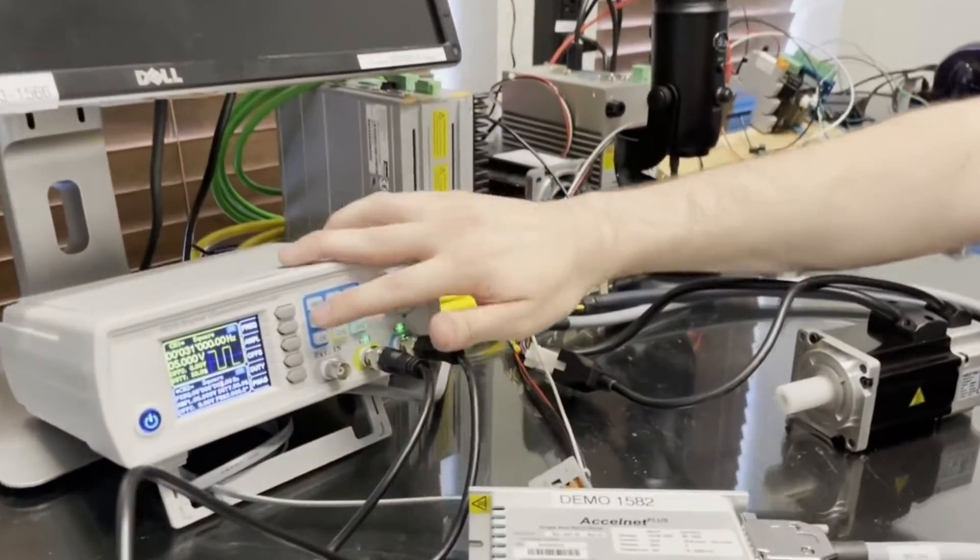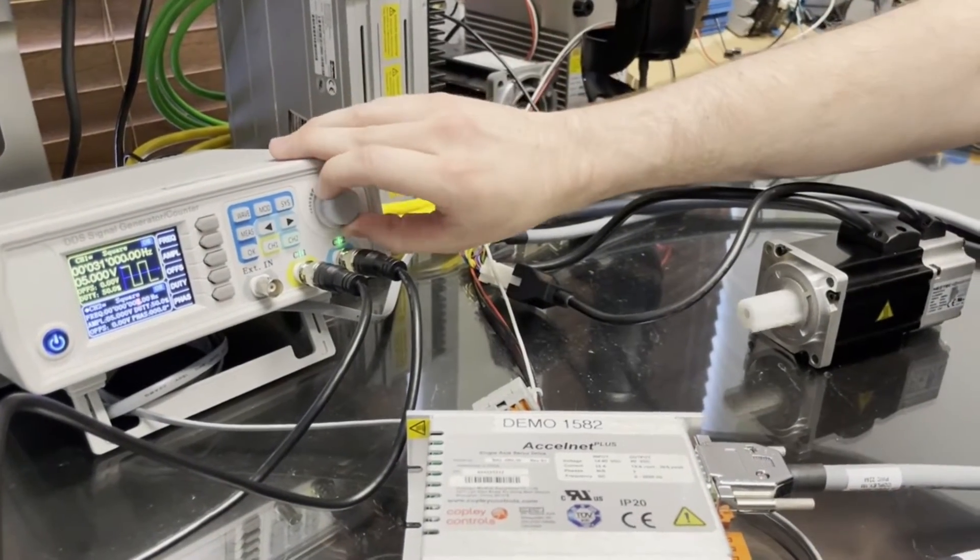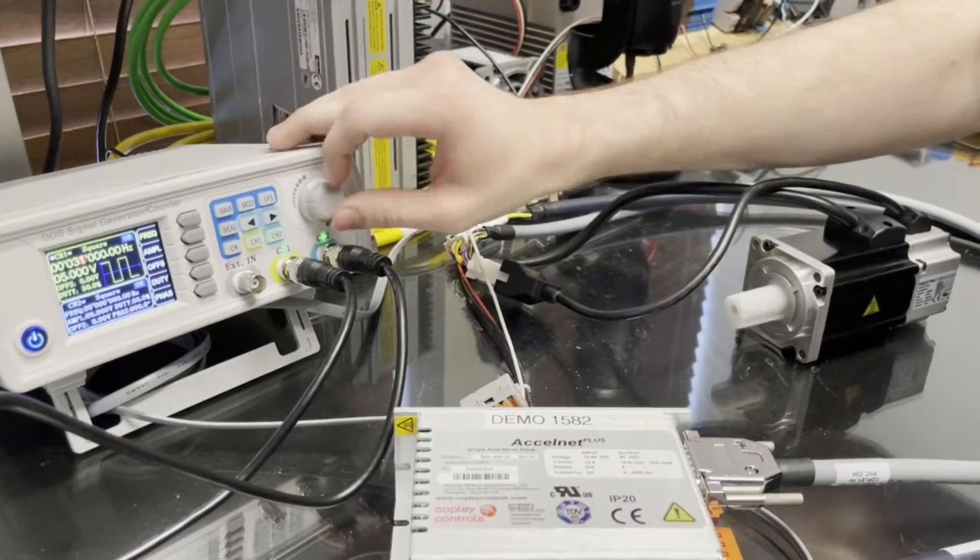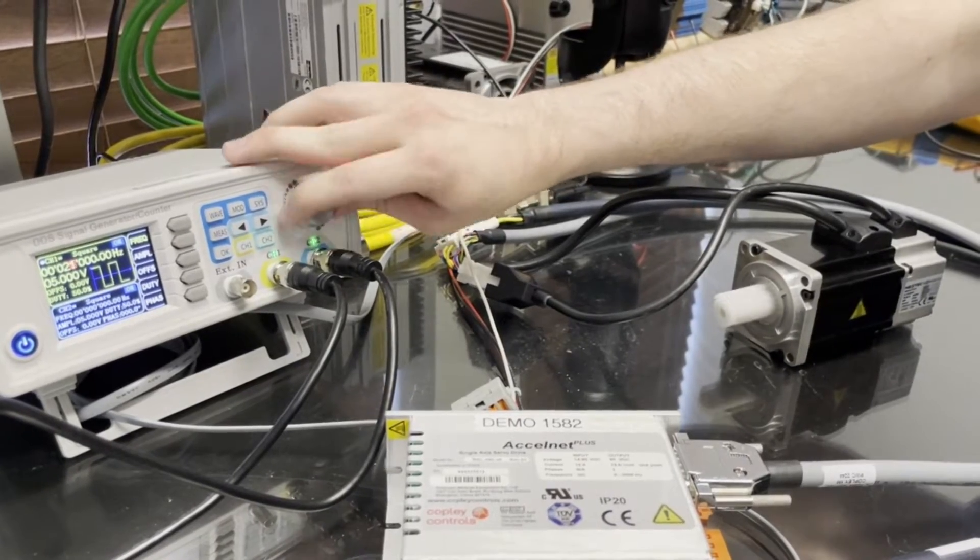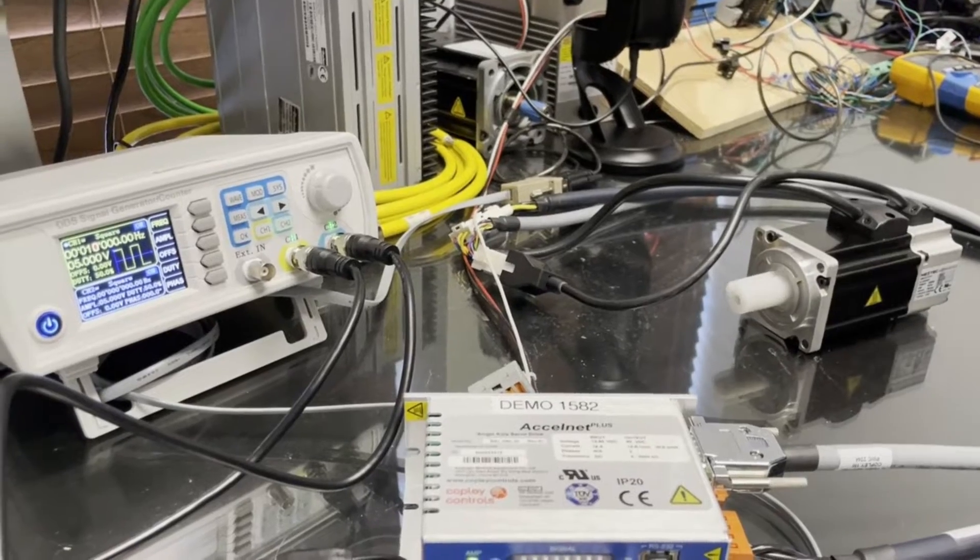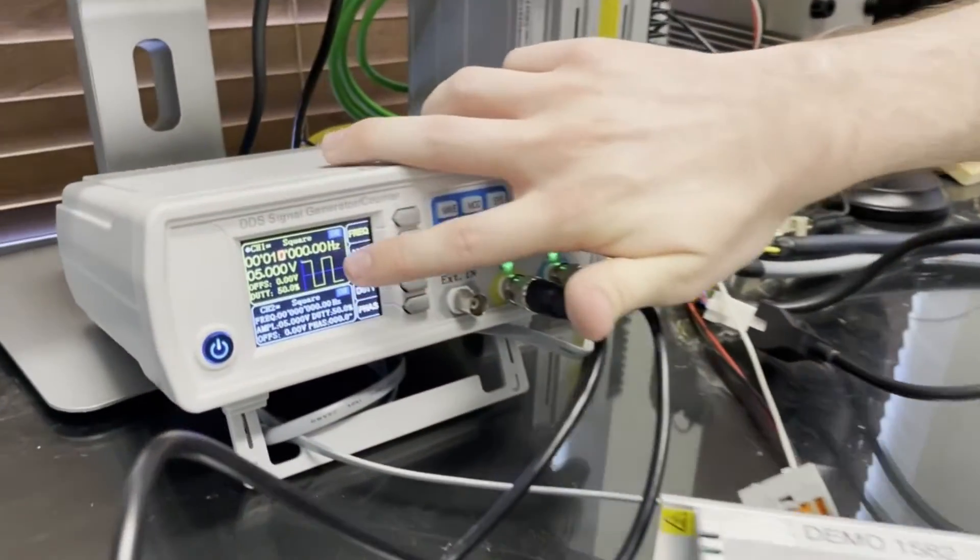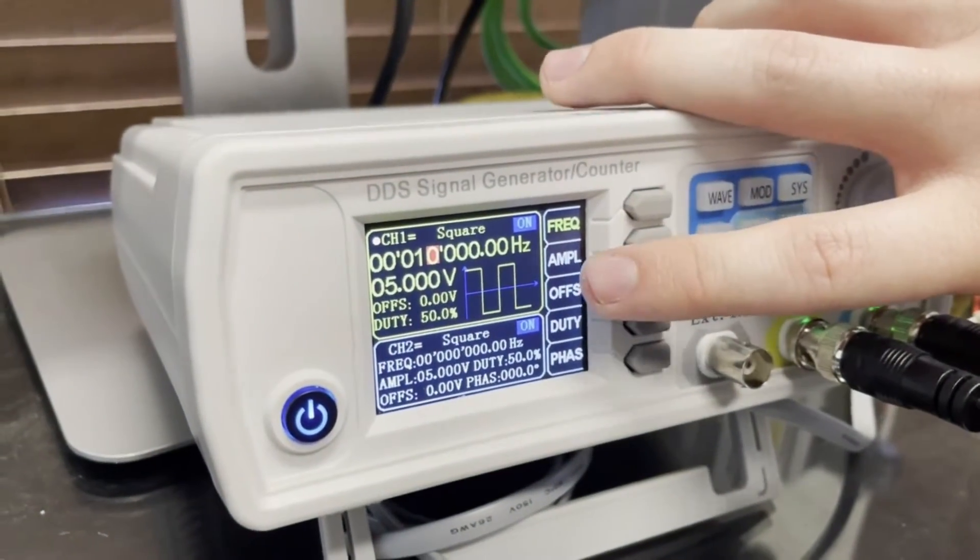So I'll showcase that. I'm on the step part right now. If I lower that right here, it will lower the speed. They're both square waves. Each pulse of this correlates to one pulse on the encoder of the motor.